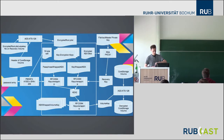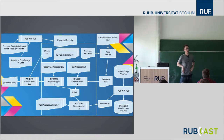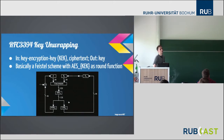The key unwrapping I found rather interesting because I hadn't seen the algorithm before. Basically, it's a Feistel scheme with the AES function, with the key encryption key as the round function. You run this for the length of the key material and then get your encrypted key out of it.